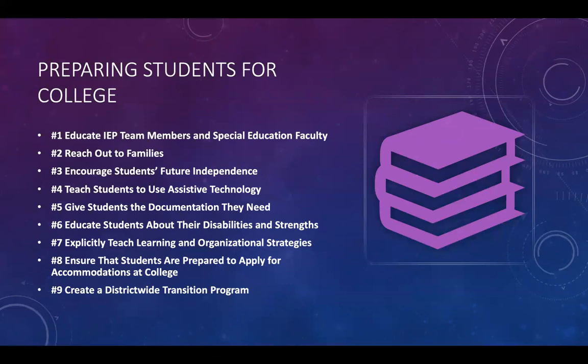When students transition from eighth grade to high school, that's a good time to talk about transition and get parents involved, so that when they transition from high school to college, they've already been through a transition process. Number three: encourage students' future independence. As students progress through high school, you may want to reduce accommodations — especially ones they won't get in college. This is one way to encourage future independence. Number four: teach students to use assistive technology they will need to function independently, since some colleges may not provide the technology.